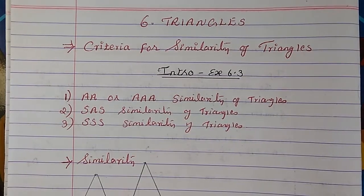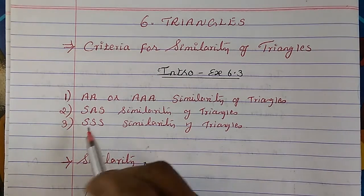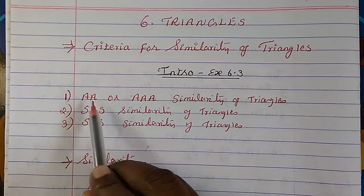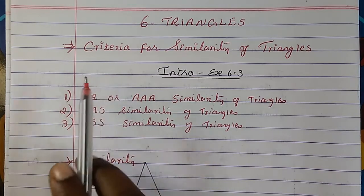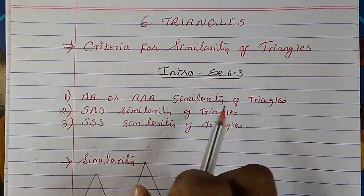Hi everyone, welcome to MASHMAT. Today we are going to study chapter 6, Triangles — Criteria for Similarity of Triangles. You can consider this as an introduction for exercise 6.3. We have seen these theorems separately before, but here in short we are going to see the conditions — criteria means the condition for similarity of triangles.